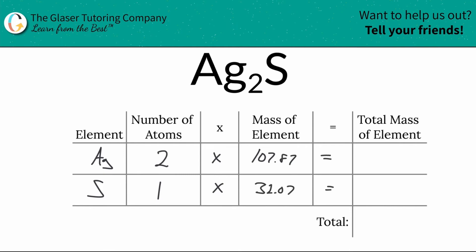Now all you have to do is multiply these rows across. When we do that, we come up with an answer here of about 215.74. And then this just works out to be 32.07.